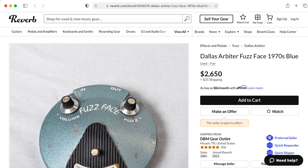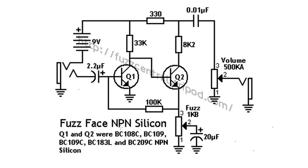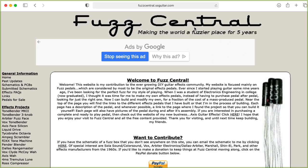I'd like to start by taking a look at what is arguably the most well-known fuzz circuit, namely the Fuzz Face. I'm showing you the NPN version of the Fuzz Face — this is a later version. The more famous version is arguably the original PNP germanium version, but I want to start with the NPN version because this circuit is laid out the way that students are more commonly introduced to transistor circuits. This schematic was originally from fuzzcentral.tripod.com, but now you can go to fuzzcentral.ssguitar.com.